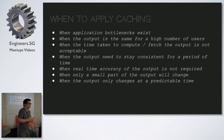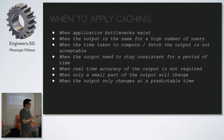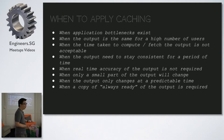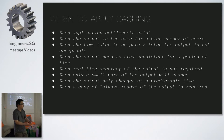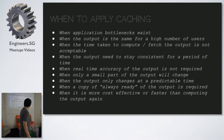Cache especially when the output only changes at a predictable time. In an enterprise environment with manual workflows, you may know when data will change — invoices keyed into the system — so you can cache until then. Also when an always-ready copy of the data is required: your database can change but you always need a ready copy to render a page or send an email. And when it's more cost effective.